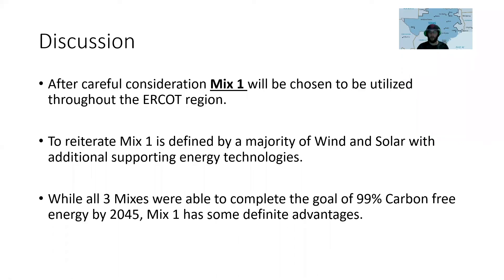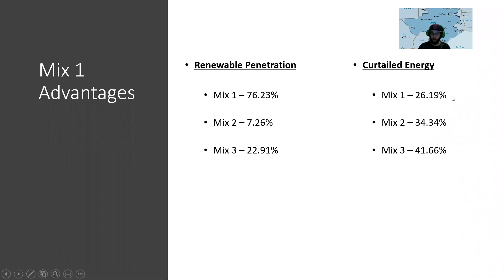After careful consideration, Mix 1 was chosen to be utilized throughout the ERCOT region. Mix 1 is defined by a majority of wind and solar with additional supporting energy technologies like biogas and geothermal. While all three mixes achieved the goal of 99% carbon-free energy by 2045, Mix 1 has the largest renewable penetration out of the three, due to its large base of wind and solar, whereas Mixes 2 and 3 have a large nuclear base. Additionally, the curtailed energy was smallest for Mix 1, due to the large amount of storage utilized.